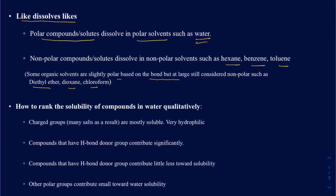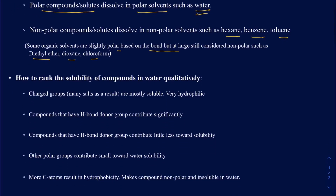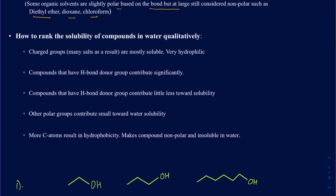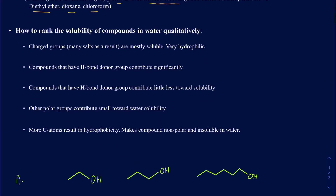What really determines if a given compound will dissolve in water or not? There is a ranked list of things you look for in a given compound, and if you have those features, that will make the compound soluble in water. The first thing in order is if you have a charged group — meaning a cation or an anion — that's going to dissolve in water. They are very hydrophilic.